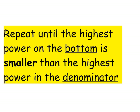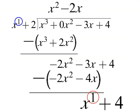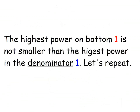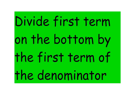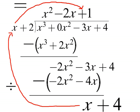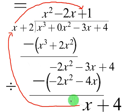Repeat until the highest power on the bottom is smaller than the highest power in the denominator. The highest power on the bottom is 1, which is not smaller than 1, so we repeat one more time. We take x down here and divide by x, which gives 1. Put the answer to the right of what you already have on top — x over x is 1.